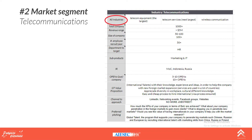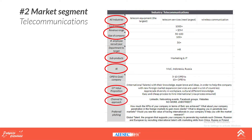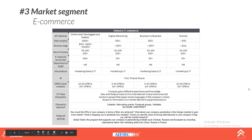The next market segment is Telecommunications. It follows the same framework: sub-industries, revenue range, company size, sub-product — which in this case is marketing and IT — IR, which includes Morocco, Indonesia, and Russia, GT value proposition, and channel to approach. All the details are inside the document.